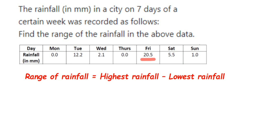this will be equal to: in place of highest rainfall, it will be 20.5mm minus the lowest rainfall, which is 0 — you can write 0.0 or simply 0. So when you subtract it, you will get the same value, 20.5mm.